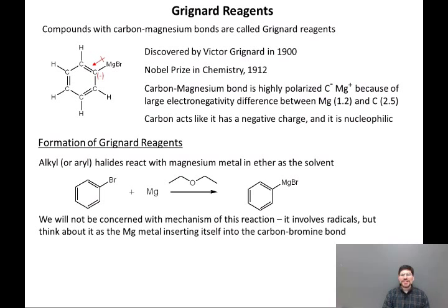We're not going to be concerned with the mechanism of how Grignard reagents are formed. That mechanism involves radicals. But the best way to think about it is just take the magnesium atom and insert it into the carbon-bromine bond, and that will give you the Grignard reagent.